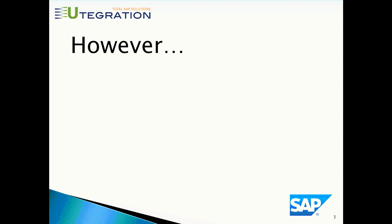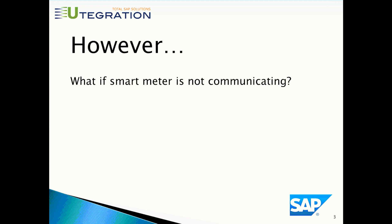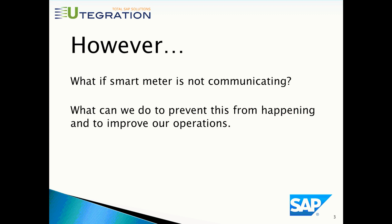However, these new meters will also create a problem. What if a smart meter is not communicating — even if it's just a couple of hours, or one whole day, or even longer than that? What can we do to prevent this from happening and to improve our operations?